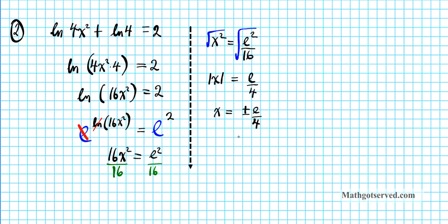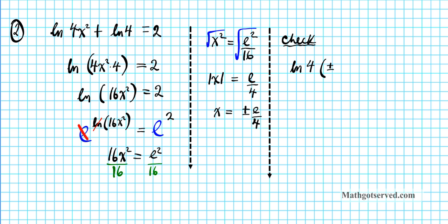It's clear we won't run into any domain issues here because you're squaring the variable — the square of a positive or negative number is always positive, so we never have a negative logarithmic argument in the first term. Now let's do our check. We plug in plus or minus e over 4 into our equation: the natural logarithm of 4 times the quantity plus or minus e over 4 squared, plus the natural logarithm of 4 — is it equal to 2?